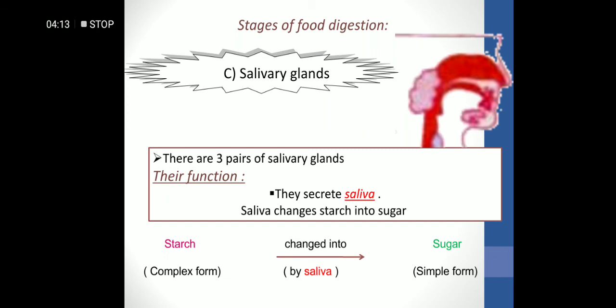The last part in the mouth: salivary glands. There are three pairs of salivary glands. They secrete saliva, the liquid in our mouth. Saliva changes starch into sugar. What is starch? Starch is a complex form of food. We can find starch in rice and bread. Starch is changed into sugar by saliva.